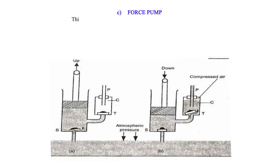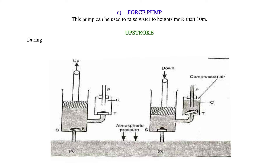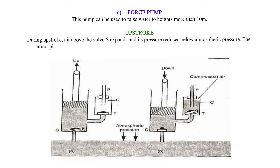Force Pump: This pump can be used to raise water to heights more than 10 meters. During upstroke, air above the valve S expands and its pressure reduces below atmospheric pressure. The atmospheric pressure on the water in the well below pushes water up past valve S into the barrel.